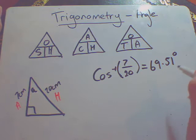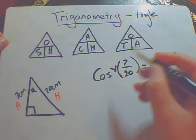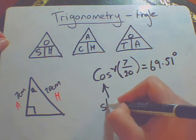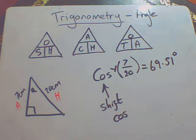There is nothing wrong with having a decimal for an angle. That is perfectly acceptable. Remember what I said, you need to press shift and then press cos and it should automatically come up. Have a go, see if you get 69.51.